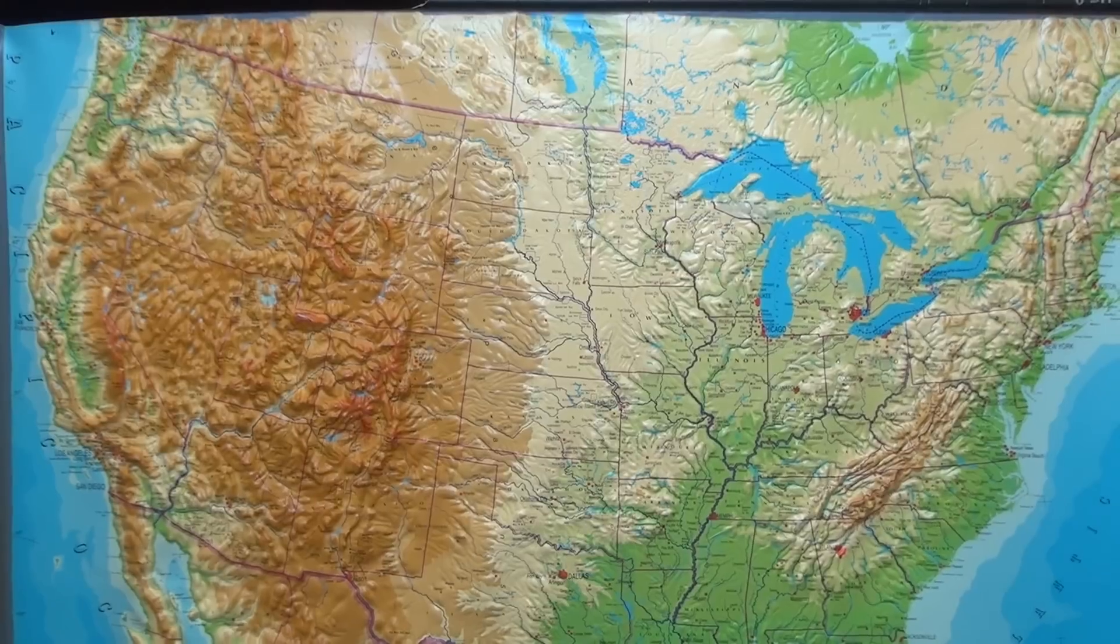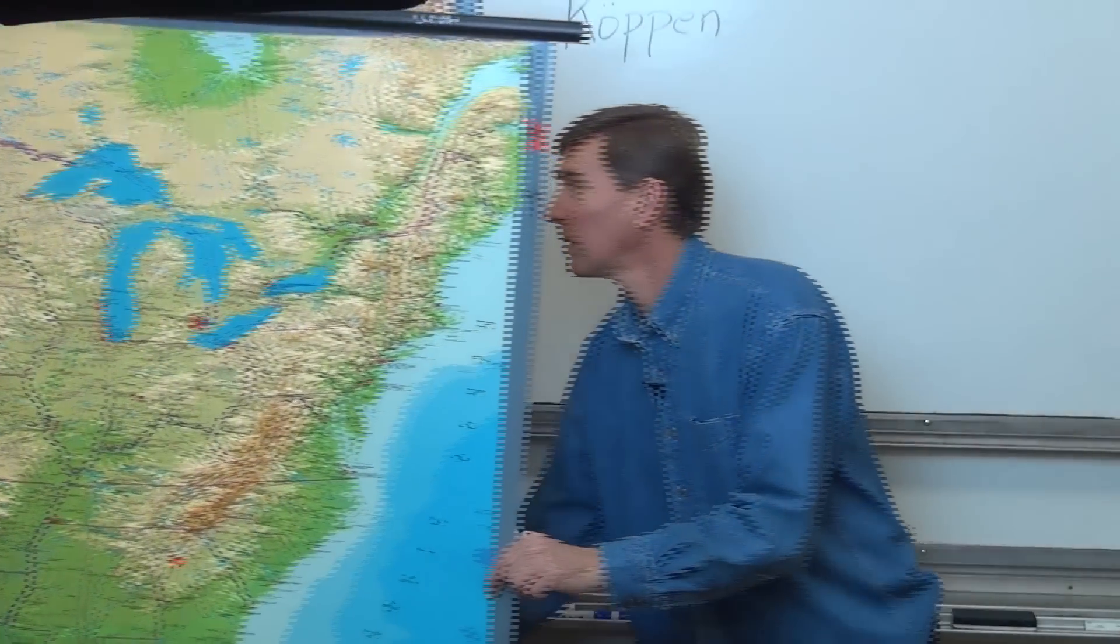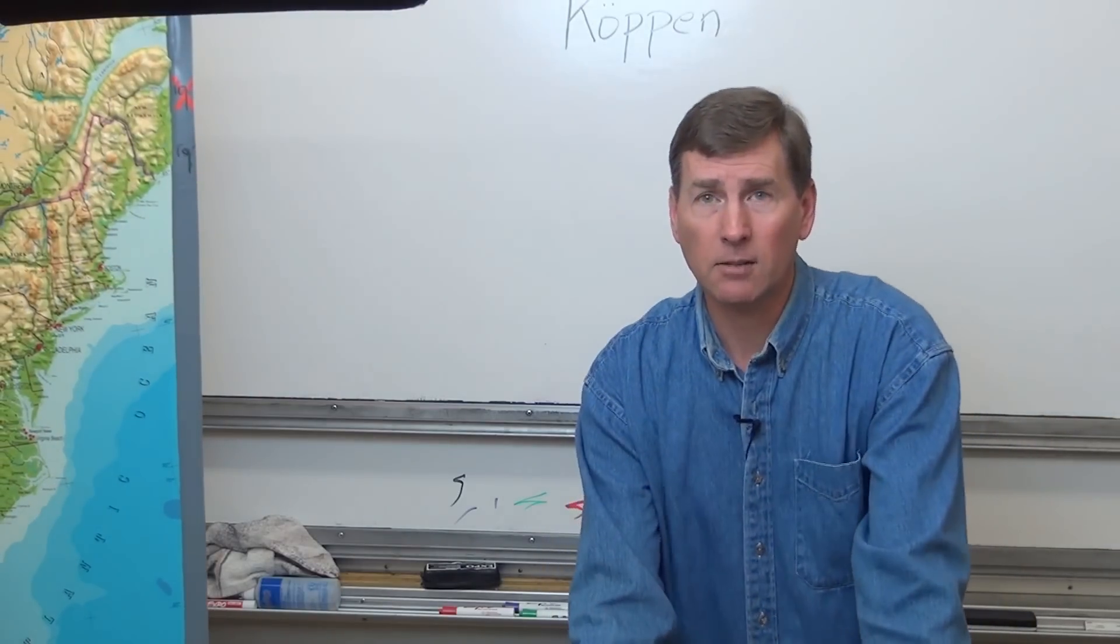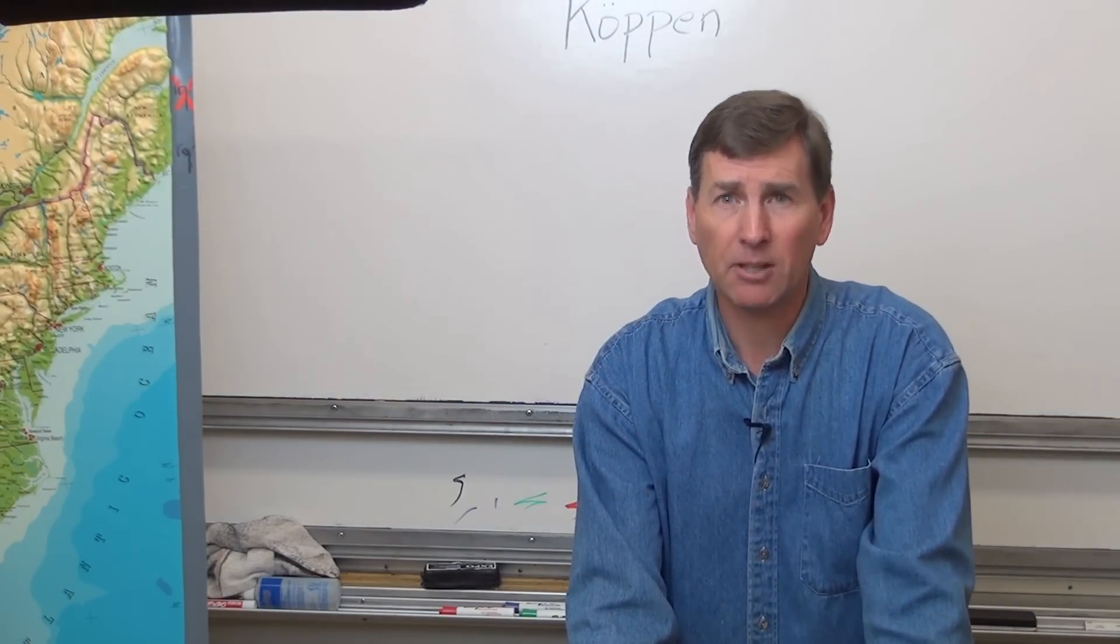Over here on the west coast, on the other side of the Rockies, we get into the temperate climates or the C climates. So let's take a look at the whiteboard now. And let me zoom on in and talk about the climate, the Köppen climate system.